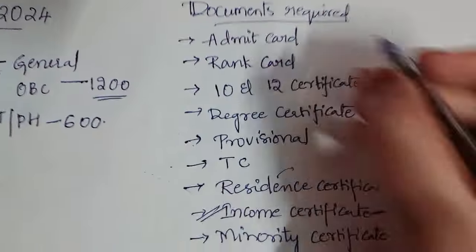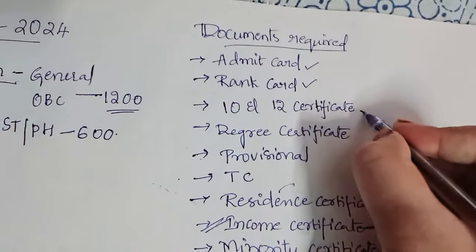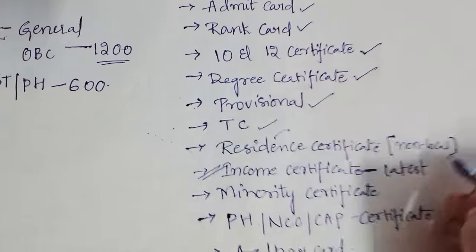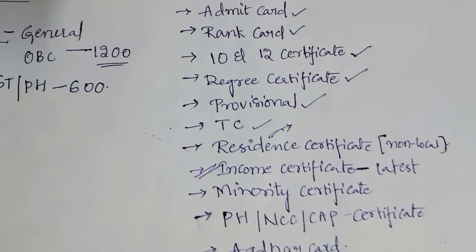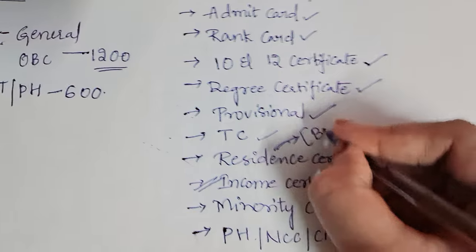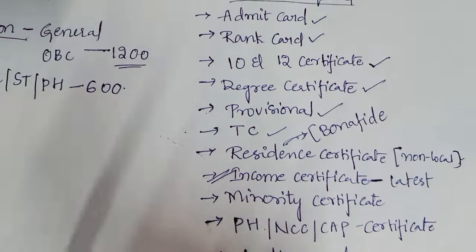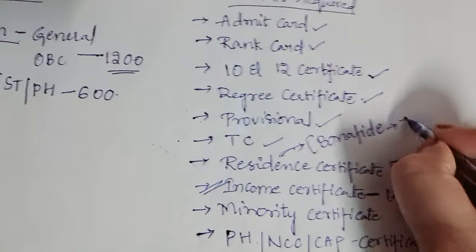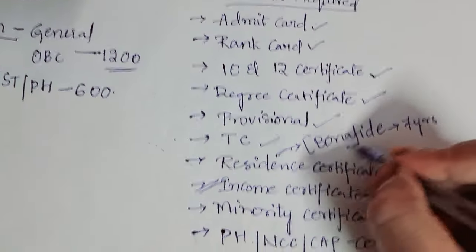The document list includes: admit card of your ICSA, rank card of your ICSA, 10th and 12th certificate, degree certificate, provisional TC, and resident certificate. However, instead of a resident certificate, your bona fide also works as a resident certificate, as it shows past seven years of residency.